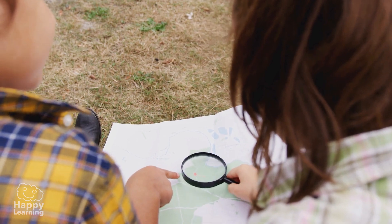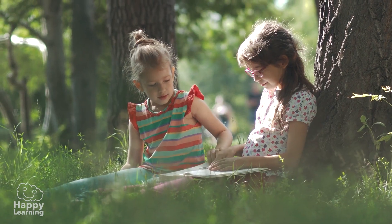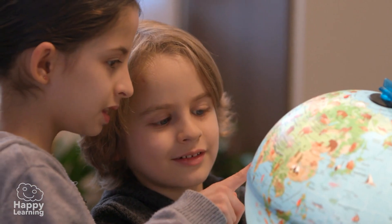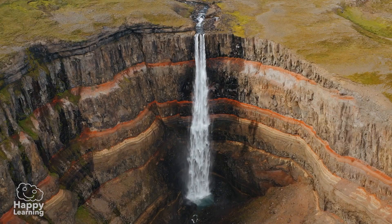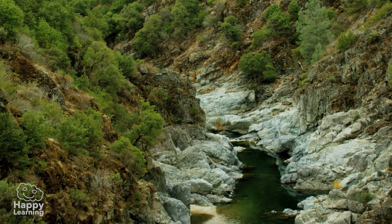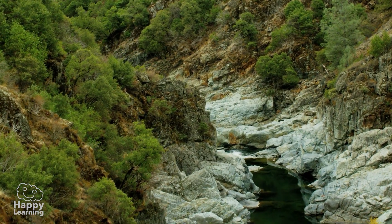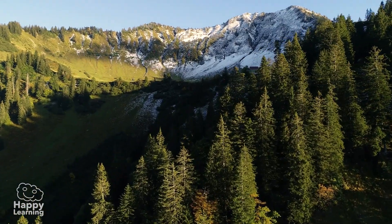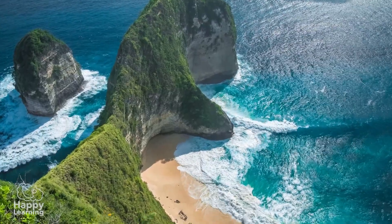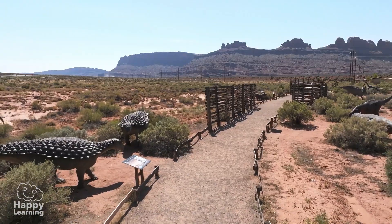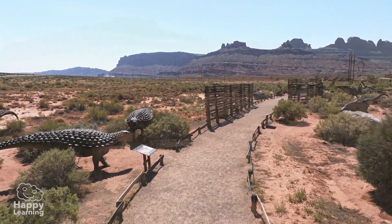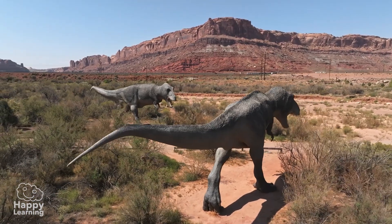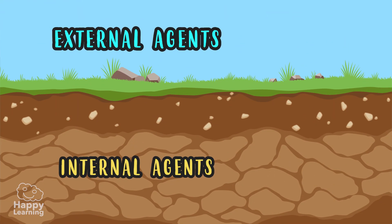Relief is much more than a geographic book full of maps and colours. Relief is this! Look! It's nothing more or less than all the different landforms of the Earth's surface. These shapes that you can see are the result of millions and millions of years of work by internal and external agents.